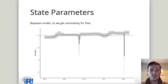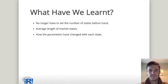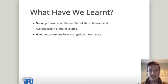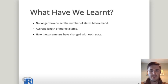As this is a Bayesian model, we get uncertainty for free, so we can plot the 95% credible interval around the average values as well. So what have we learned? We no longer have to set the number of states beforehand — the data decides how many states are appropriate. We've also got the average length of each market state to understand how long each state typically lasts. We've also observed how the parameters change with each state, and can see that the current bull market's average parameters appear larger than those of previous bull markets.